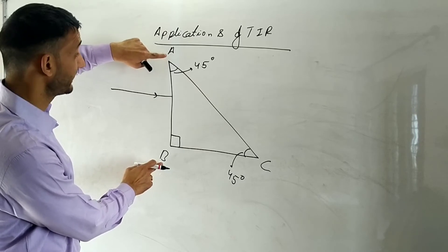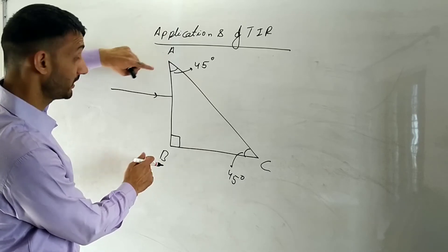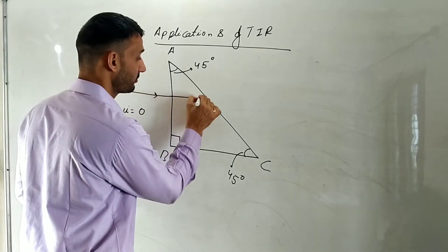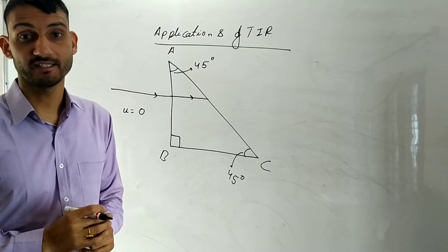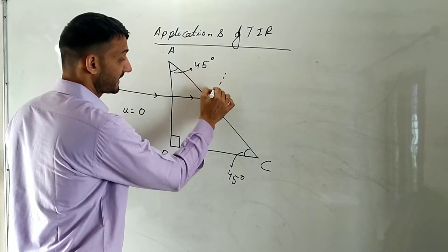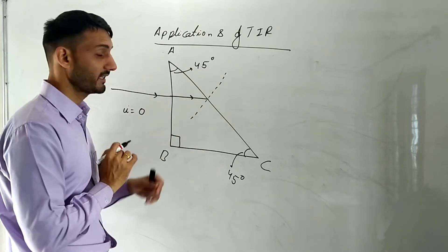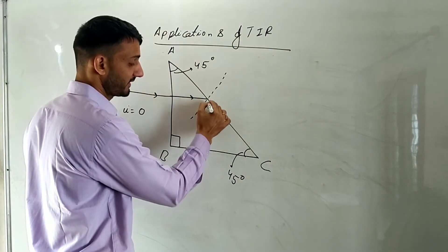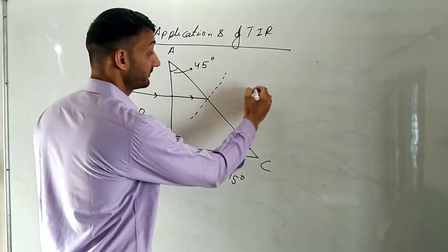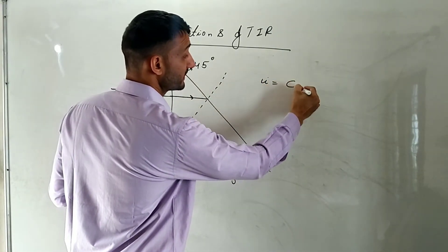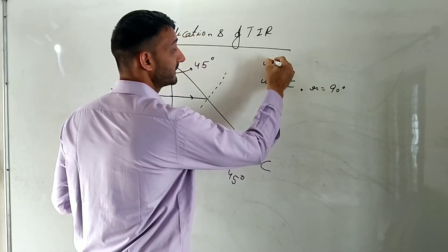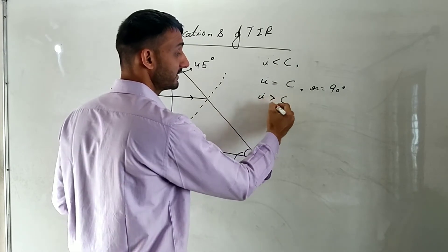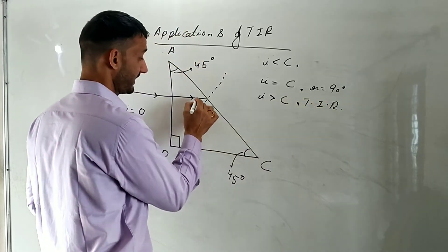If asked: what is the angle of incidence at surface AB? The answer is 0 — it is normal incidence, so the light ray goes straight without bending. Then we draw a normal at the next surface. Whether the light comes out or reflects back depends on the angle of incidence there. If angle of incidence equals critical angle, refraction angle is 90°; if less, light comes out; if greater than critical angle, TIR takes place. So it is very important to find this angle of incidence.